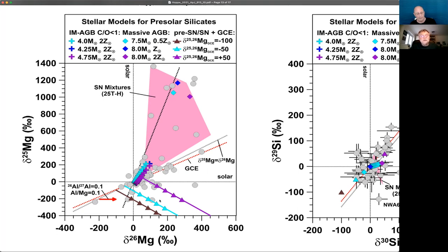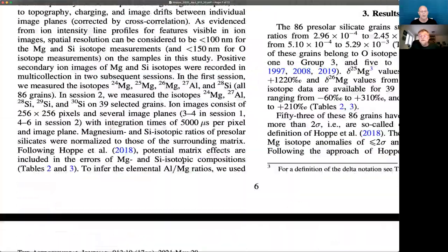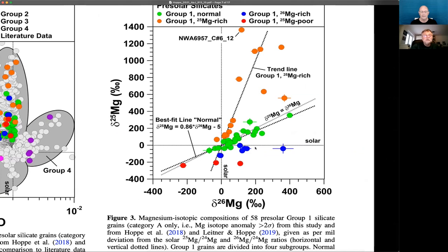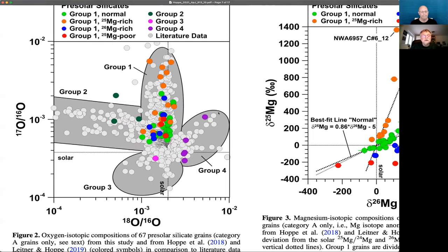That's all about group one grains. Let me quickly say something about the oxygen isotope group four grains — those are the grains which show enrichments in oxygen-18. These are the classical supernova grains. But as you've seen, now there are many more supernova grains from group one, which add to the group four grains. So the total fraction of supernova grains now exceeds 30% of all pre-solar silicates — much more than what was thought before.